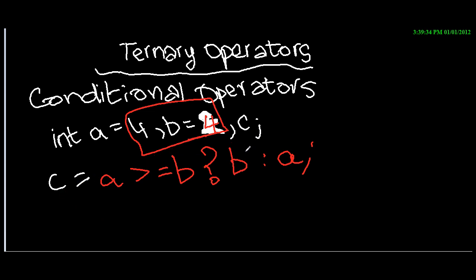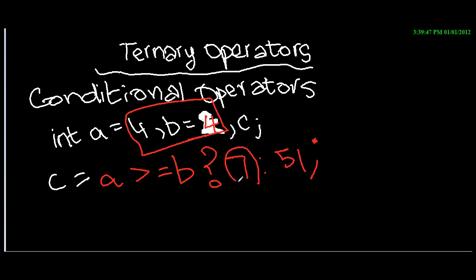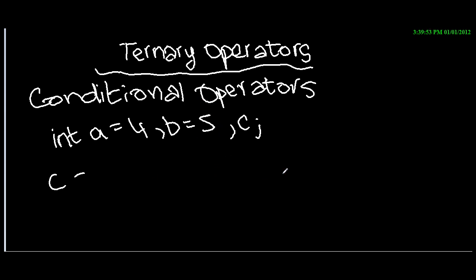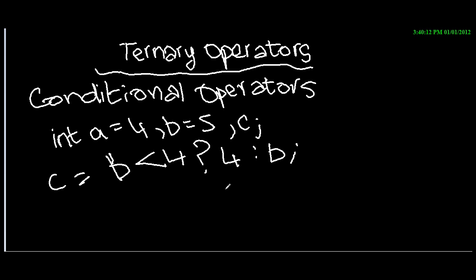Now let's say b and a are 7 and 51. In this case it would store the value 7 if a is greater than or equal to b, otherwise it stores 51 in variable c. Another example: c equals b less than 4 question mark 4 colon b. So if b is less than 4, store the value 4; if b is not less than 4, store the value of b. Pretty straightforward — you can try it out.